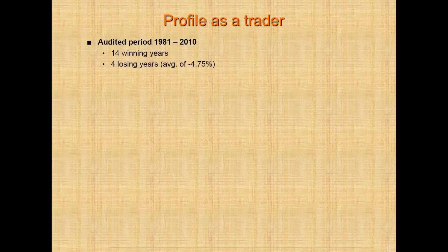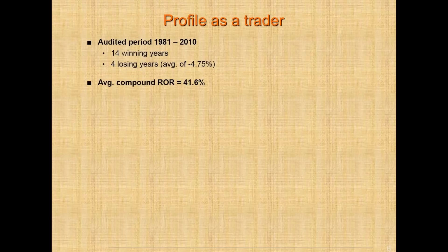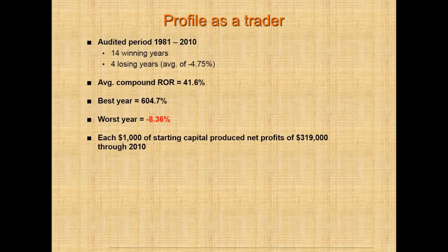From 1981 to 2010, I had my performance record audited. Our career record as a firm was 14 winning years and 4 losing years. Having that performance record audited is a very expensive process. Auditors reviewed my tax records, FCM statements, and bank deposit and withdrawal slips. Our average losing year was 4.75%, and our average compounded rate of return was 41.6%. Our best year was an amazing 604%, and our worst year through 2010 was minus 8.4%. Each $1,000 of starting capital at Factor in 1981 had produced trading profits of $319,000 — that's really the power of compounding.